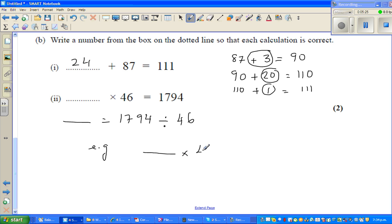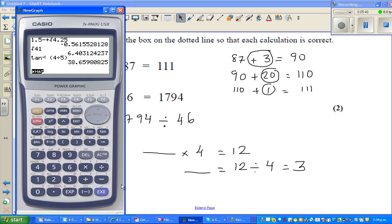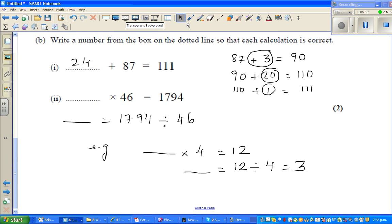So you can get this number by dividing this by this. Get the calculator out: 1794 divided by 46, which is 39. So my answer is 39.